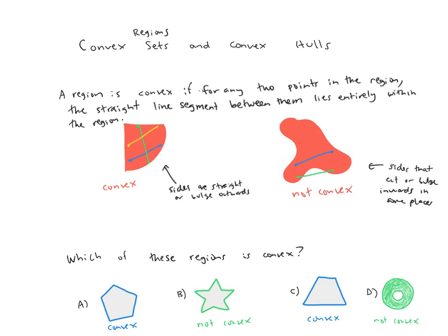For shape B, here's a pair of points so that the line between them goes outside of the region. And for D, here's a pair of points so that the line between them hops outside of the region.